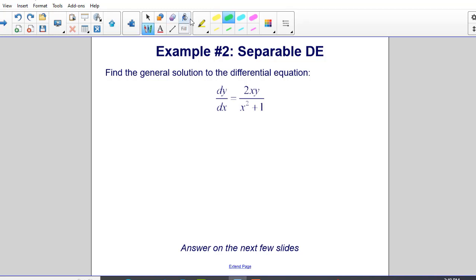Example number two. Find the general solution to the differential equation. Highlighting the word general because we are not given an initial condition, which means we are not going to be able to solve for c.